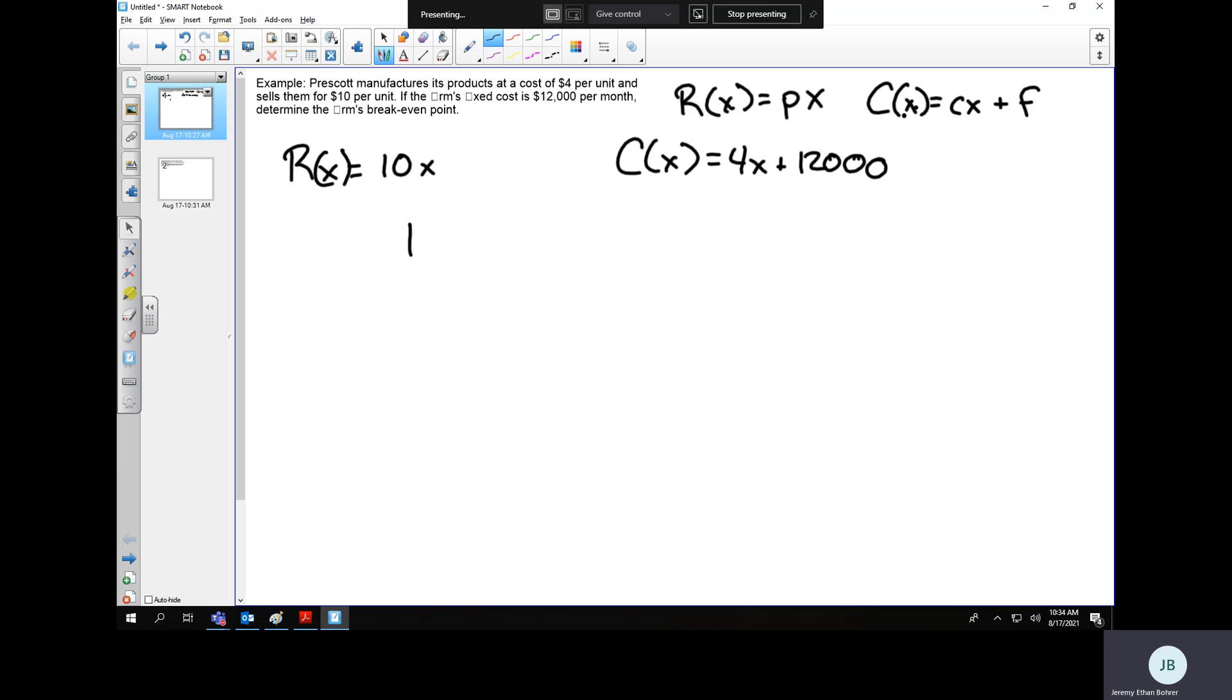So we just say 10X equals 4X plus $12,000. I can subtract my 4X from here to get 6X equals 12,000. And divide both sides by 6.